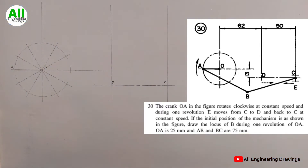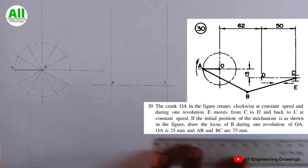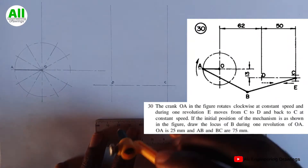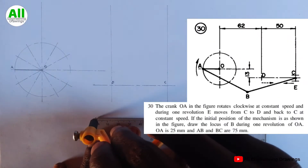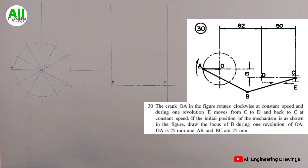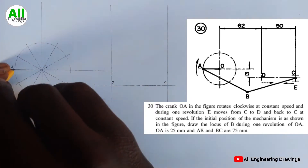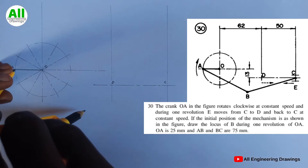After that I will adjust my compass to a radius of 75 mm, because the question says AB and BC are 75 mm. I will place the compass on point A and cut an arc this way.